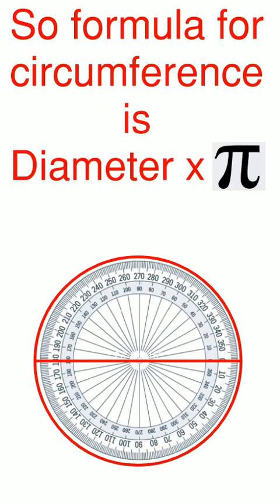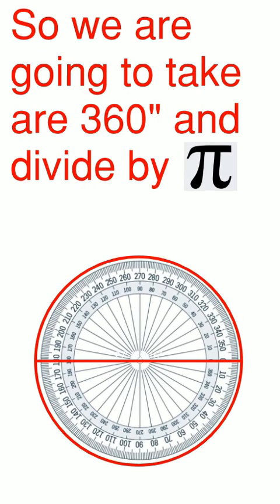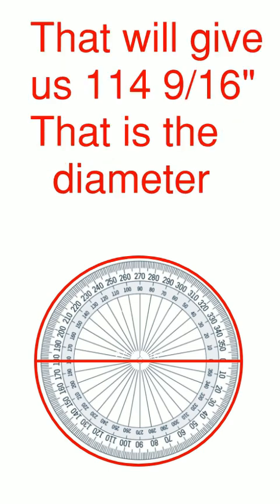So the formula for circumference is diameter times pi. So we're going to work it backwards. We're going to take the 360 inches and divide by pi and then that will give us 114 and 9/16ths. That is the diameter of that circle.